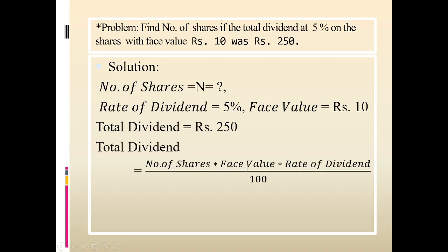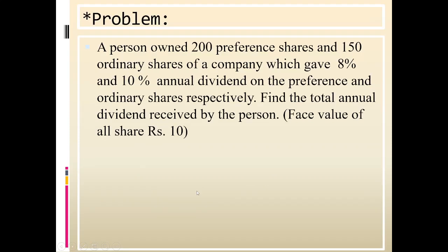We use the second formula: total dividend = number of shares × face value × rate of dividend ÷ 100. Substituting all values into this formula, we get number of shares = 500.